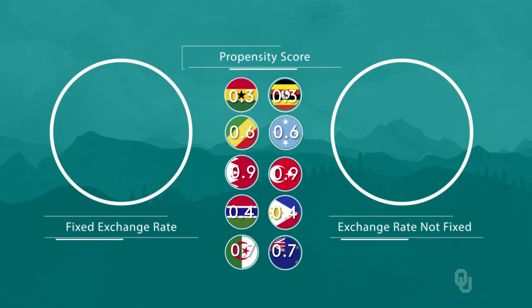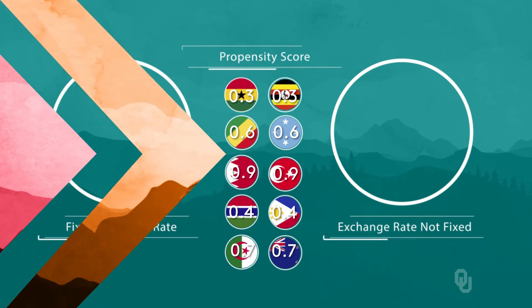That's propensity score matching in a nutshell. To make matching work, we need a strong first-stage model that gives good predictions of the probability of adopting treatment. We'll address this later in the section.